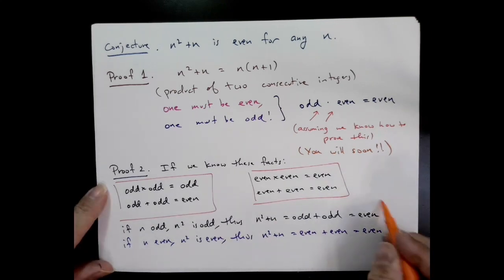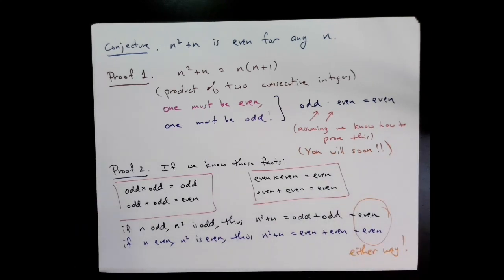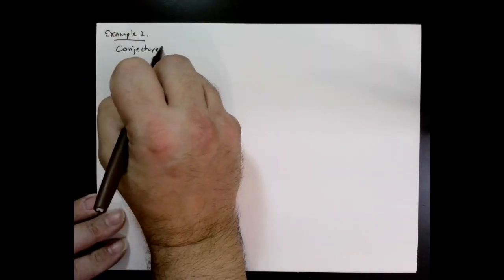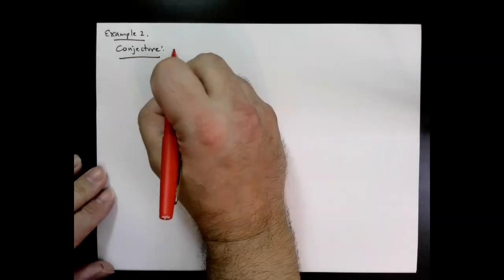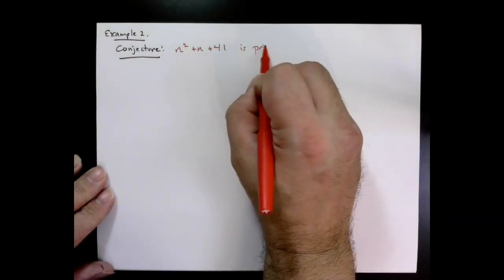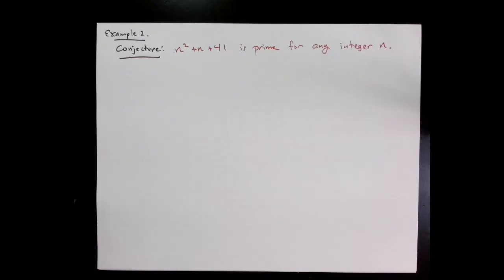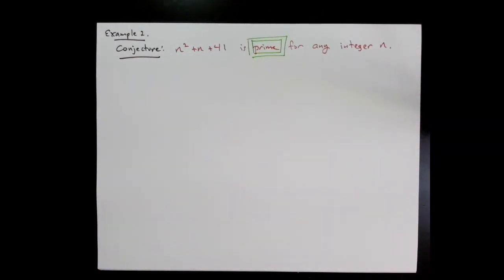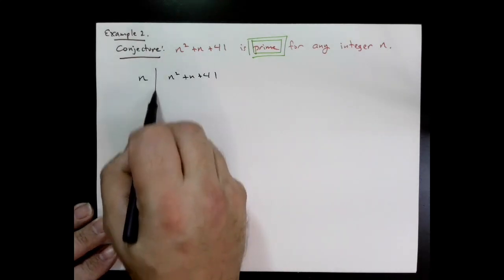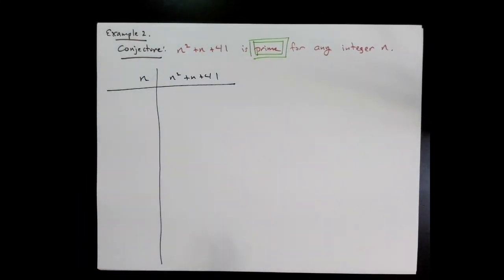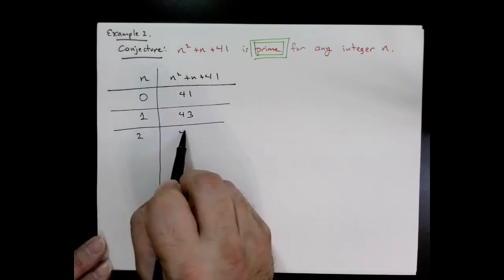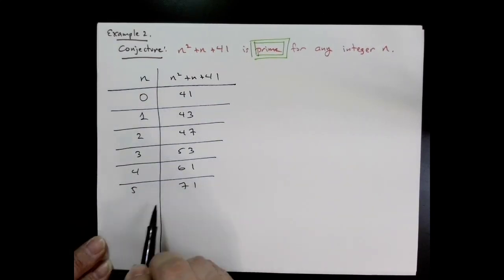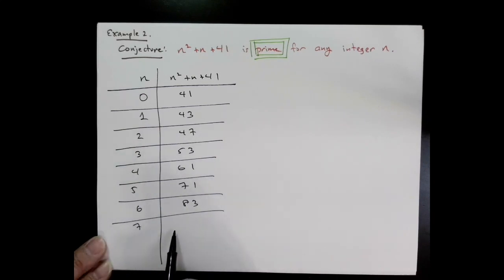Example number two. Here's a nice conjecture that looks like maybe it fell into our lap: n² + n + 41 is prime for every integer n. Let's go ahead and start computing. I plug in 0, 1, 2, 3, and so forth, and I get these numbers: 41, 43, 47, all the way down. I start going through these numbers and I notice: 41 is prime, 43 is prime, 47 is prime.